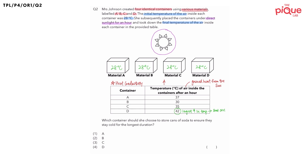The next thing I would like the class to identify is which container is made up of the poorest conductor of heat. When we are talking about the poorest conductor of heat, the air inside the container is going to gain heat the slowest, meaning the final temperature of the air after an hour will be the lowest temperature. Which container is at the lowest temperature after an hour? It will be container B — it has the smallest increase in temperature, and container B is made up of the poorest conductor of heat.